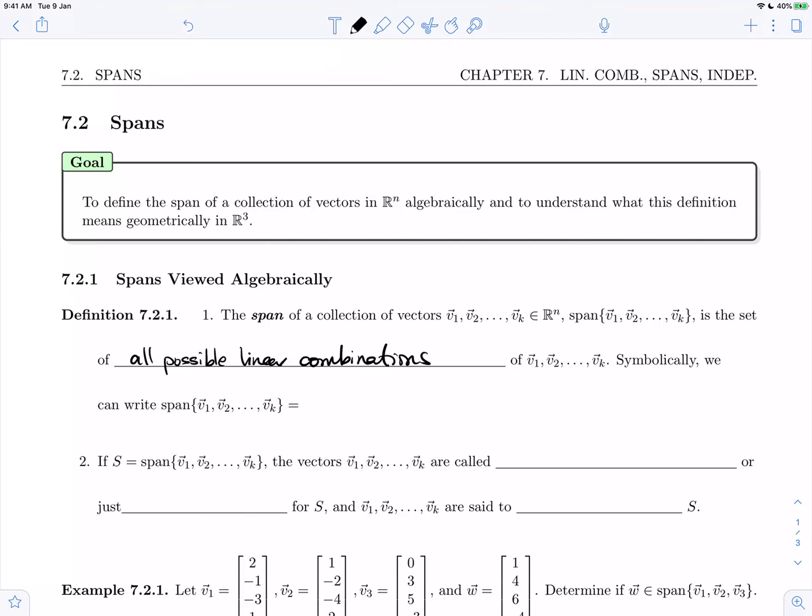Symbolically we can write this as the set of all vectors w in R^n such that w can be written as a linear combination: a1*v1 + a2*v2 + ... + ak*vk.